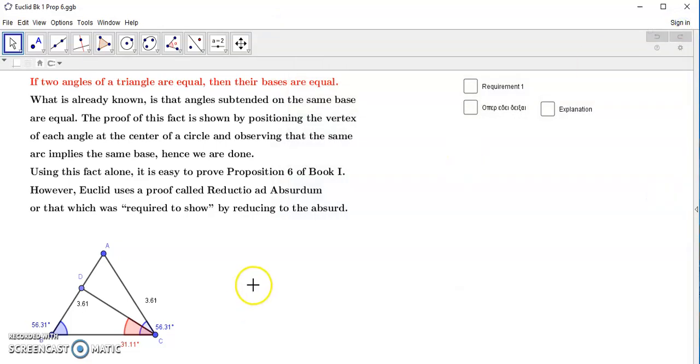Now, Proposition 1.6 of Book 1 is the one that states if two angles of a triangle are equal, then their bases are equal. So in other words, if this angle here is equal to this blue angle, then these sides are equal because an angle such as this one, this blue one, is subtended on this base.